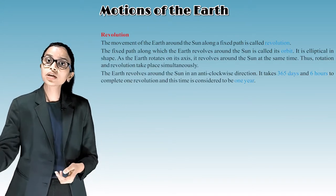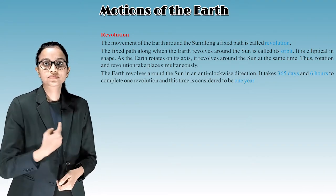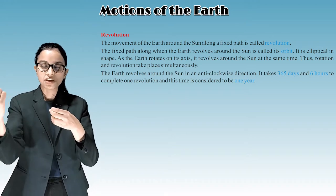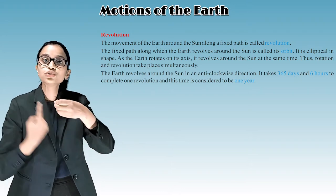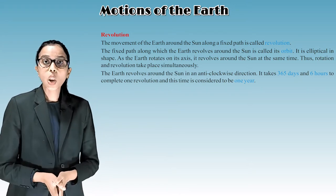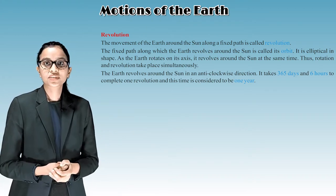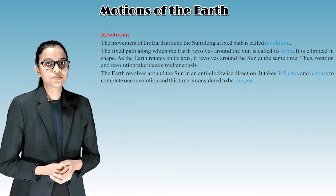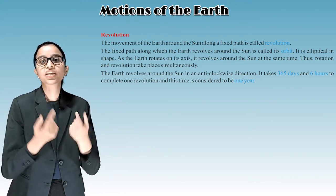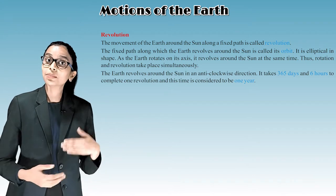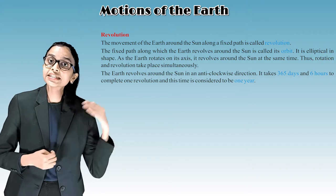The movement of the earth around the sun along a fixed path is called revolution. The fixed path along which the earth revolves around the sun is called its orbit, and it is elliptical in shape. As the earth rotates on its axis, it revolves around the sun at the same time — rotation and revolution take place simultaneously. The earth revolves around the sun in an anti-clockwise direction.